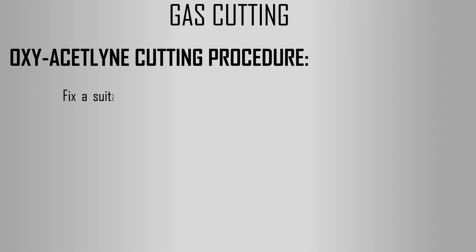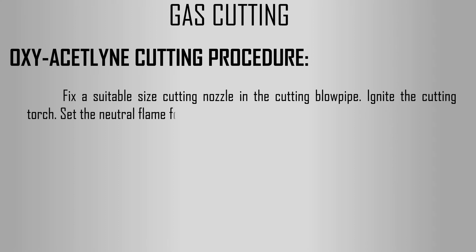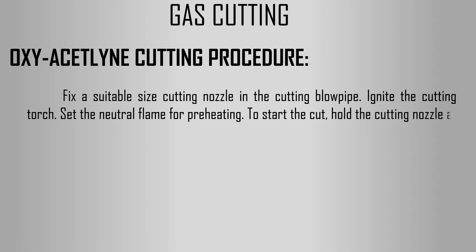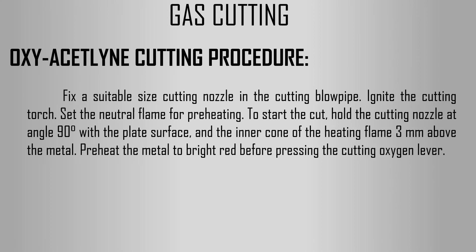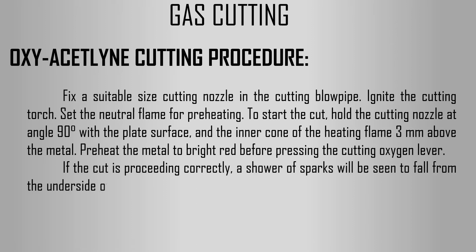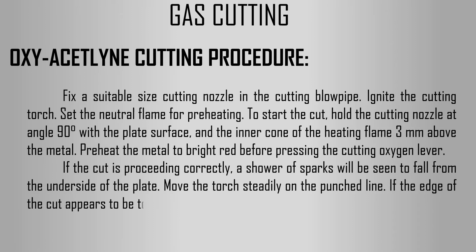Let's see the oxyacetylene cutting procedure. Fix a suitable size cutting nozzle in the cutting blowpipe. Ignite the cutting torch and set the neutral flame for preheating. To start the cut, hold the cutting nozzle at 90 degrees to the plate surface with the inner cone of the heating flame 3 mm above the metal. Preheat the metal to bright red before pressing the cutting oxygen lever. If the cut is proceeding correctly, a shower of sparks will be seen to fall from the underside of the plate. Move the torch steadily on the punch line. If the edge of the cut appears to be too ragged, the torch is being moved too slowly.